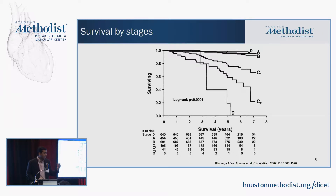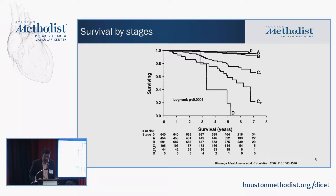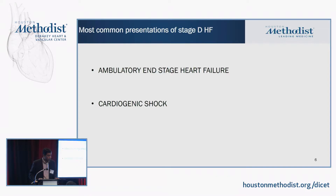It's important to differentiate what stage you're in because your survival vastly differs. Patients who have stage D heart failure — pretty much everyone is dead by five years. Stage D heart failure is as bad as having pancreatic cancer, even though it doesn't get the same press. It's important to recognize because now we really can do something about it. The two most common presentations of stage D heart failure are ambulatory end-stage heart failure or cardiogenic shock.